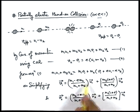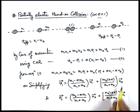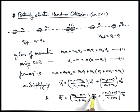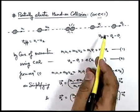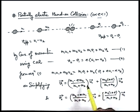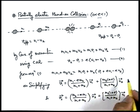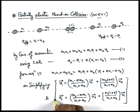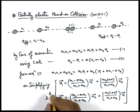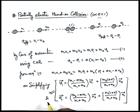Here we have already taken velocities in vector formats, because this collision is one-dimensional, so either we need to take a positive or a negative sign with the vector. These two expressions are very important.